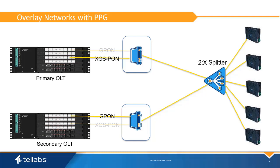This allows the GPON and XGS-PON signals to operate completely independent of each other from a protection status. XGS-PON might be active on the primary OLT and GPON can be active on the secondary OLT. Once cabled up, it can be treated as any other PON Protection Group, with the exception that you must be aware of both XGS-PON and GPON signals on the fiber and force both onto the same OLT prior to performing any maintenance or upgrades to prevent service from being affected.